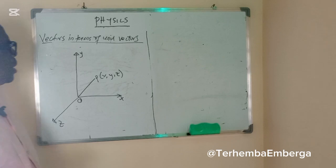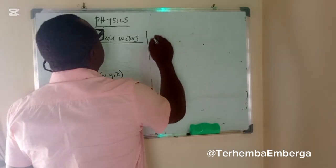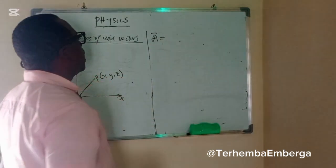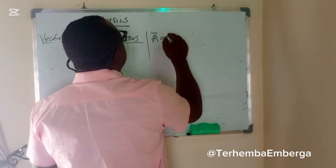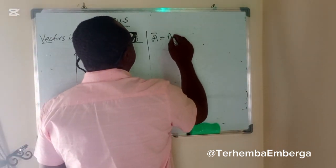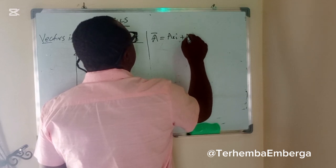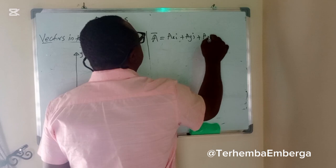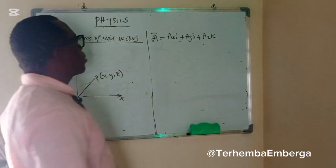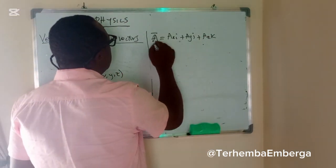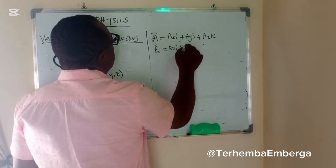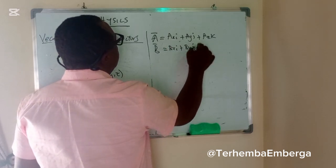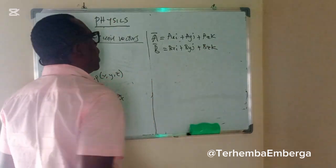Assuming we have a vector A in terms of a unit vector, vector A can be represented as AXI plus AYJ plus AZK. The same way, vector B can be represented as BXI plus BYJ plus BZK.